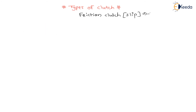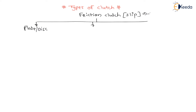The second type is friction clutches, which are called slip clutches or negative clutches — there is a possibility of slip because of friction materials. Now there are three types of friction clutches: first is plate clutch or disc clutch, second is conical clutch, and third is centrifugal clutch. For friction clutches, they can be engaged as well as disengaged at any speed, unlike positive clutches which can only be engaged at zero speed.